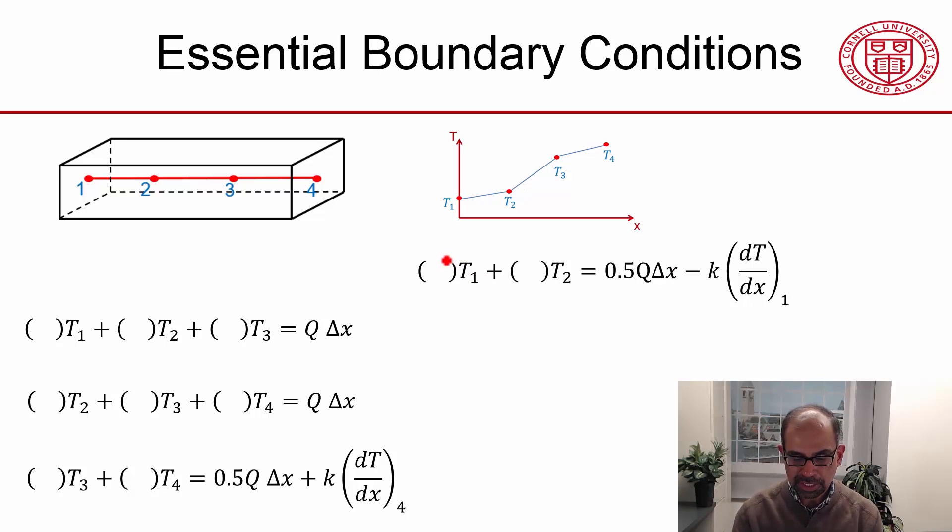I've brought the equation at the first node onto the right-hand side. The reason I did that is because it involves this term, the gradient at the left boundary, and that's the heat flux at the left boundary. That's not known, so this equation involves an unknown on the right-hand side. So I've set it aside.